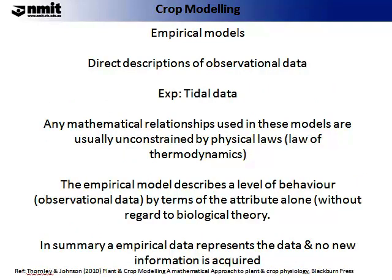The second large group of models used in crop modelling is called empirical models. They are direct descriptions of observational data, for example like tidal data. Any mathematical relationships used in these models are usually unconstrained by physical laws — such as the laws of thermodynamics. The empirical model describes a level of behaviour or observational data by terms of the attribute alone, without regard to the biological theory. In summary, empirical data represents the data and no new information is required.